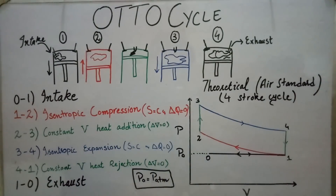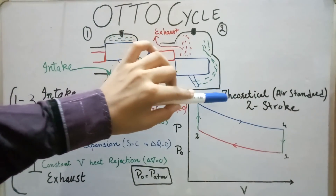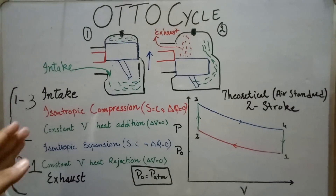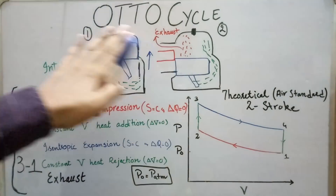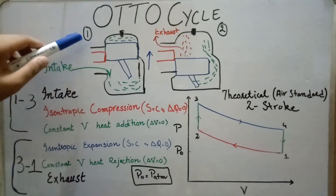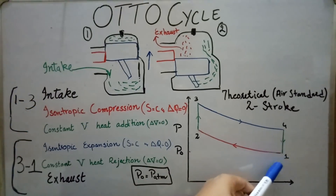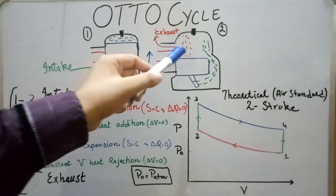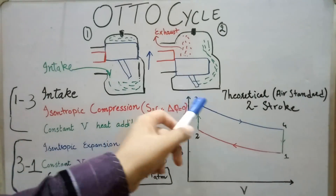For the two stroke air standard theoretical Otto cycle, all the processes are the same as the four stroke cycle, but there are only two strokes by design. In the first stroke, the intake, isentropic compression, and constant volume heat addition from 1 to 3 occur simultaneously. In the second stroke, isentropic expansion, constant volume heat rejection, and exhaust occur simultaneously from 3 to 1.